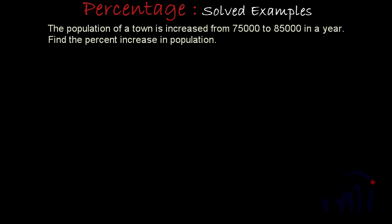It is a very simple example. So how do we solve it? First, we will find the increase in population. Increase equals 85,000 minus 75,000, which equals 10,000. So the increase in the population is 10,000 in a year.